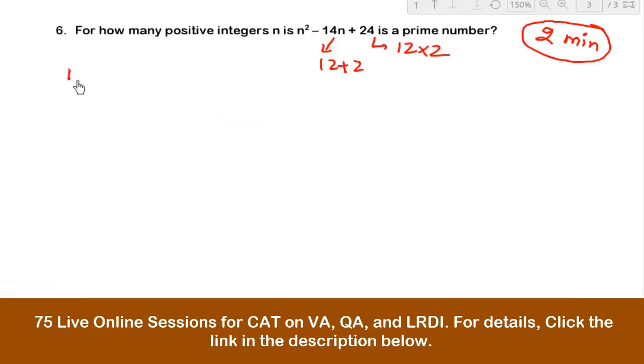So we can say that n² - 14n + 24, if I want to factorize, then the roots are 12 and 2. So here it would be (n - 12) and (n - 2).